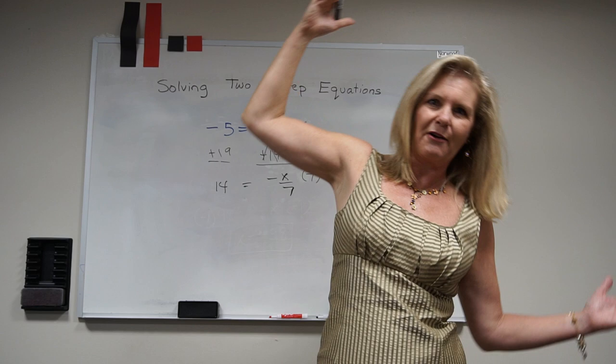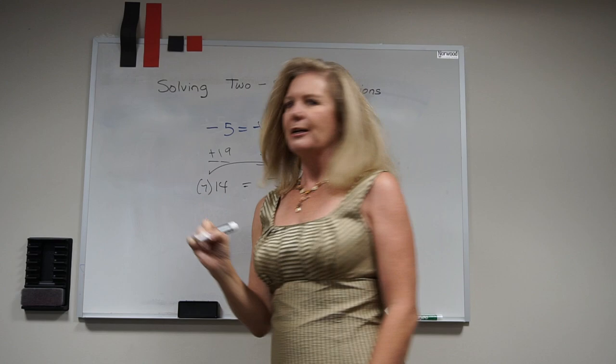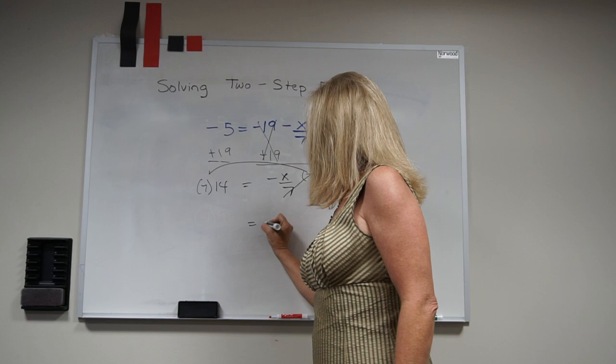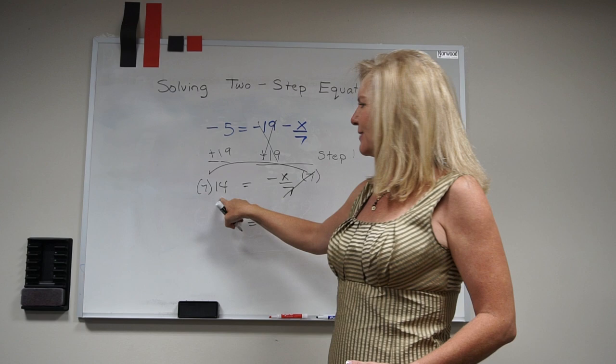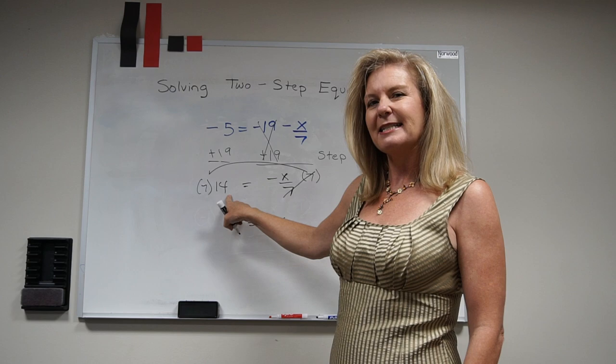So when I do my inverse, they're going to cancel those 7's out and I'm left with negative x. On this side, I'm going to use my mental math: 7 times 10 is 70, 7 times 4 is 28, 70 plus 28 is 98. But I have a problem because I don't want to know what the opposite of x is.